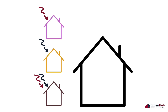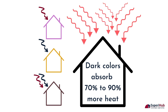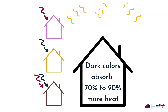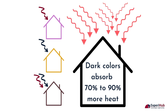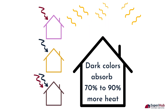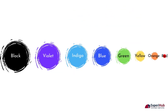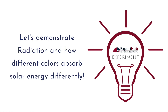According to the National Renewable Energy Laboratory, dark and dull colors on a home's exterior absorb anywhere between 70-90% of the sun's energy. Hence, dark paints make a house warmer while light paints do not. Black absorbs more of the different wavelengths of light energy, followed by violet, indigo, blue, green, yellow, orange and red in descending order.